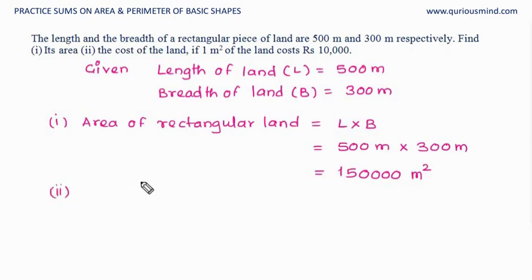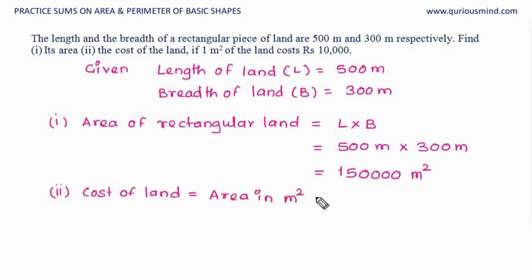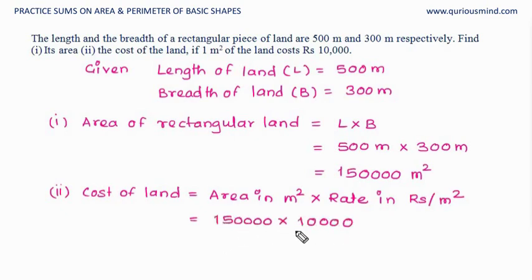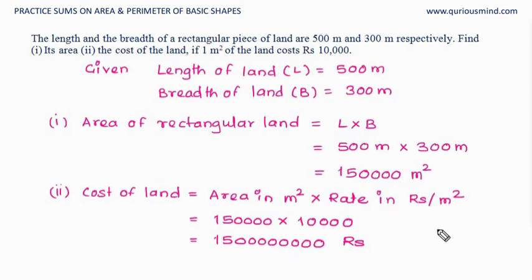Now we need to find the cost of the land. Cost of the land is the rate per meter square multiplied by the area in meter square, which is 1,50,000 multiplied by 10,000. The meter square and per meter square cancel, leaving rupees. So the cost of land is 150 crore rupees.